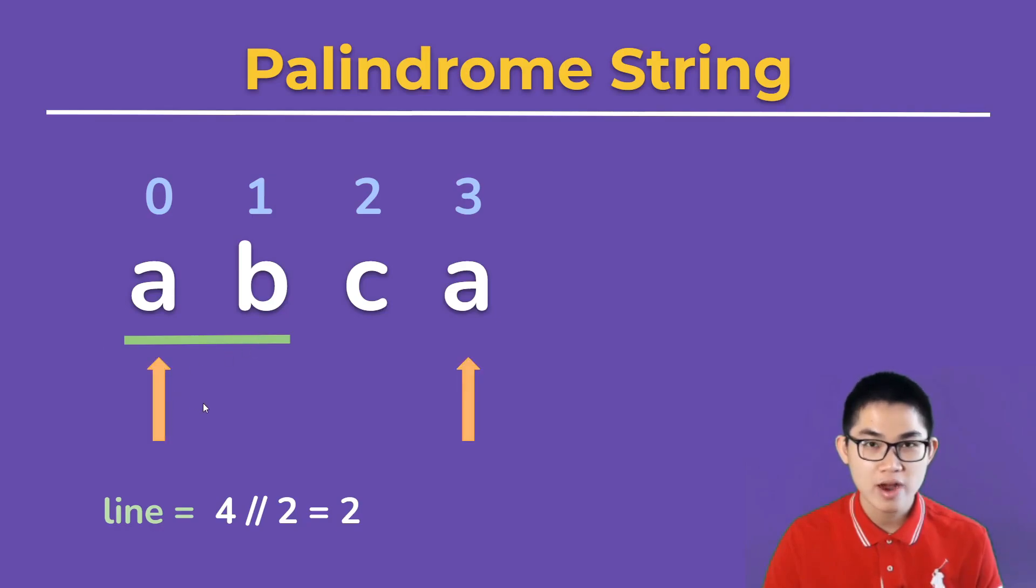We put the two arrows at the beginning and the end. A is the same as A. How about this? B is not the same as C. So this is a sign that tells us that this is not a palindrome.